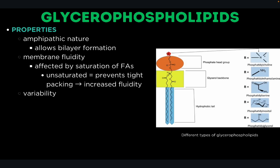For the properties, glycerophospholipids are amphipathic in nature, meaning they contain both a hydrophilic or polar side and a hydrophobic or non-polar region. This allows bilayer formation. They also exhibit membrane fluidity, which refers to viscosity and flexibility, and this is affected by the saturation of fatty acids. Double bonds cause kinks which prevent tight packing, increasing fluidity. Variability in fatty acids and head groups gives a wide variety of molecules with different properties and functions.